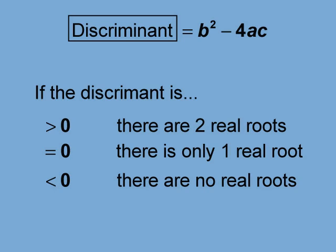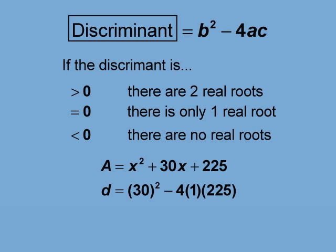Let's calculate the discriminant for our quadratic. The b value of 30 goes here. The a value of 1 goes here. And the c value of 225 goes here.